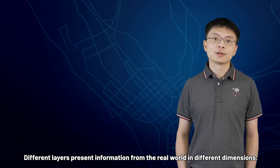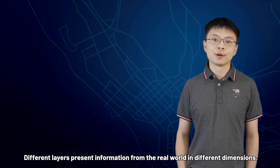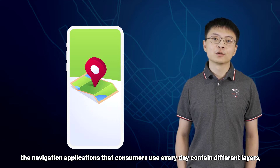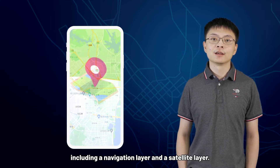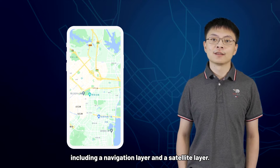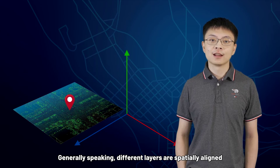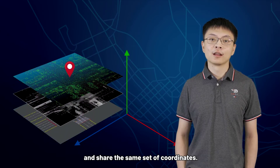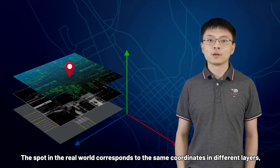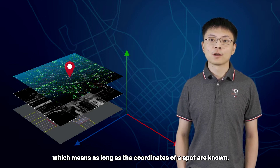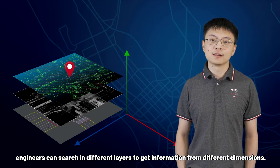Different layers present information from the real world in different dimensions. For example, the navigation applications that consumers use every day contain different layers, including a navigation layer and a satellite layer. Generally speaking, different layers are spatially aligned and share the same set of coordinates. The same spot in the real world corresponds to the same coordinates in different layers, which means as long as the coordinates of the spot are known, engineers can search in different layers to get information from different dimensions.